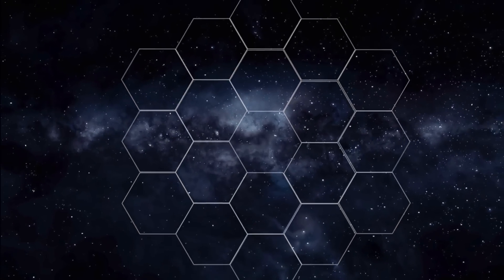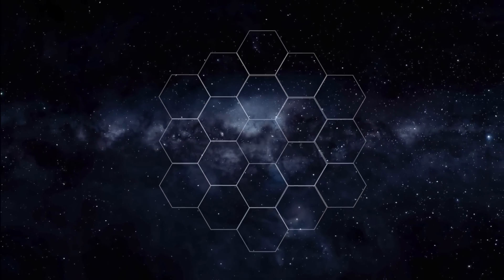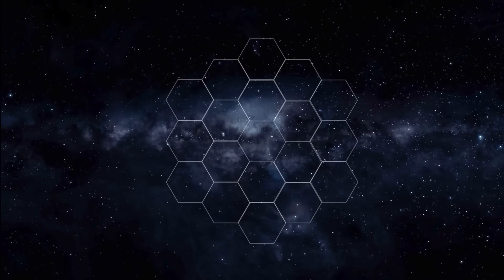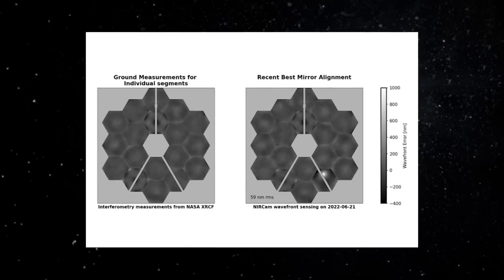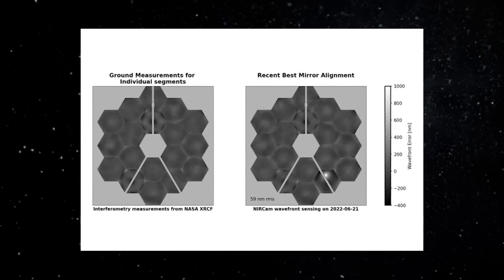On the other hand, other micrometeoroid impacts during the spacecraft's first six months of operation had no effect. The report includes an image of the damage to segment C-3, a hexagonal piece of the observatory's primary mirror.